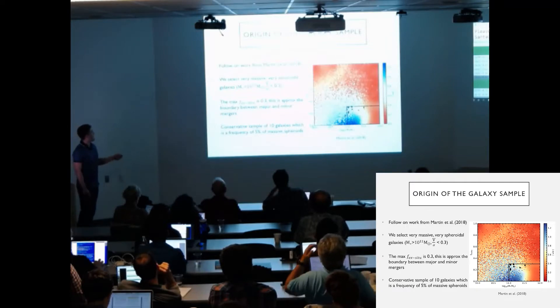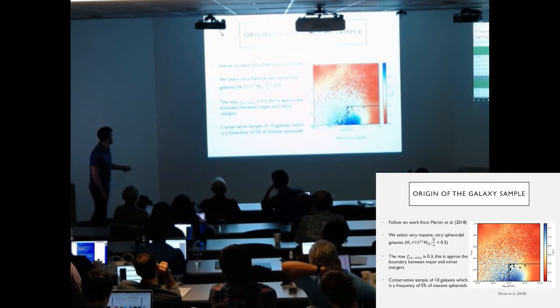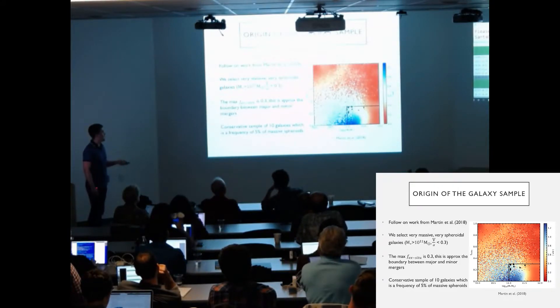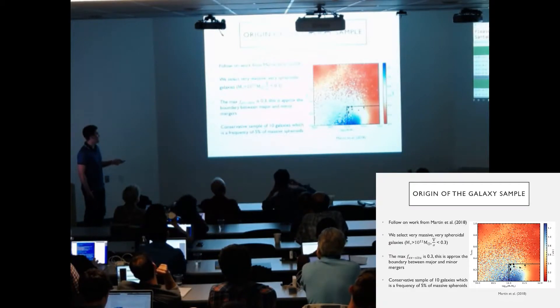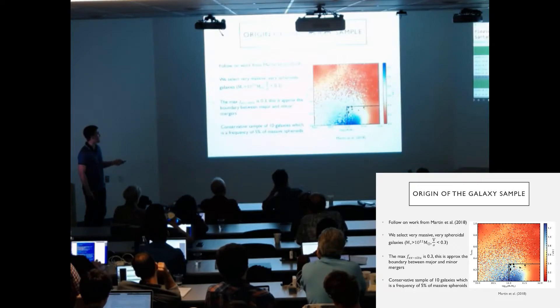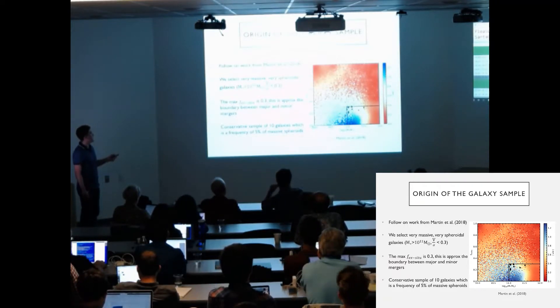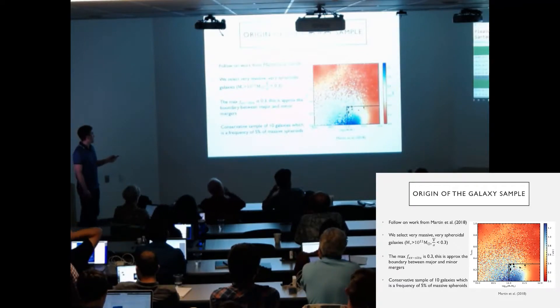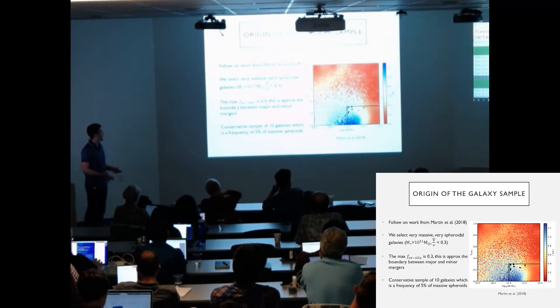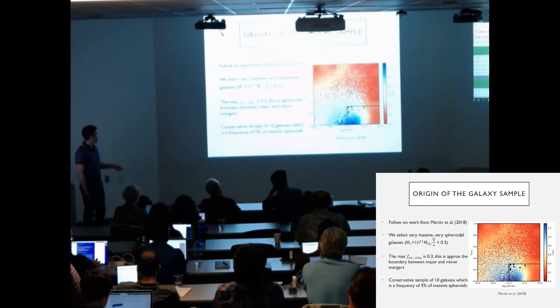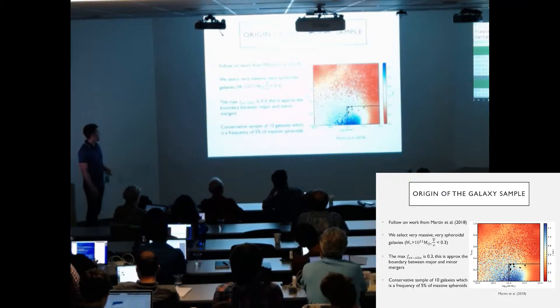So where does this sample come from? Well this very colorful plot over here is plotting a selection of galaxies from Horizon AGN, plotting ex situ mass fraction against stellar mass, and color coded by the galaxies V over sigma. So we've selected a very massive, very spheroidal selection of galaxies with stellar masses greater than 10 to the 11 solar masses and V over sigma less than 0.3. We set a mass ex situ fraction of 0.3, and this is approximately the boundary between major and minor mergers, so galaxies below this shouldn't have had any major mergers in their history. This conservative sample generated 10 galaxies, which is a frequency of around 5% of these massive spheroids in Horizon AGN.